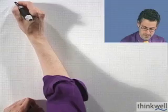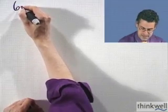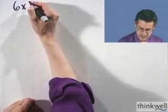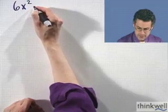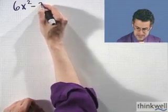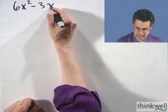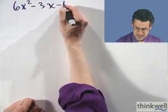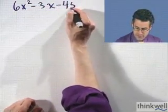All right, you know what? Just for fun, let's try one more just together, just before anyone notices that we're still here. How about this one? 6x squared minus 3x minus 45.